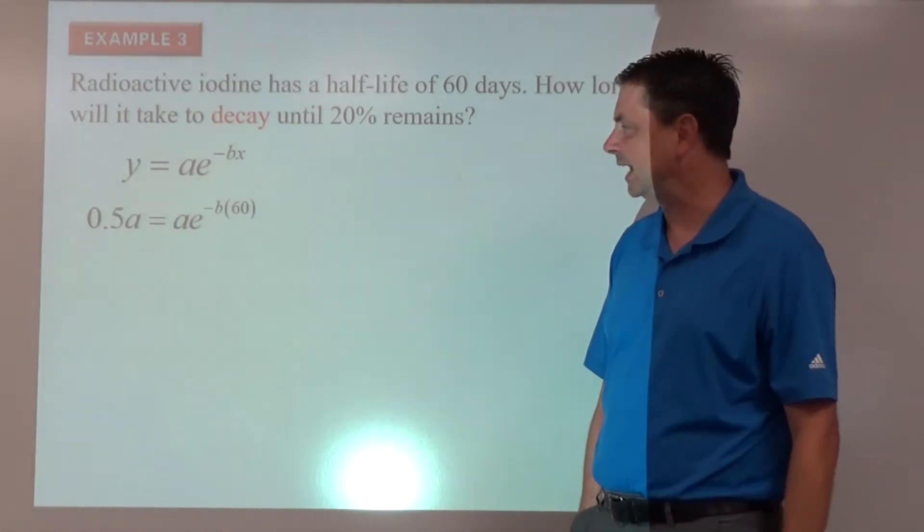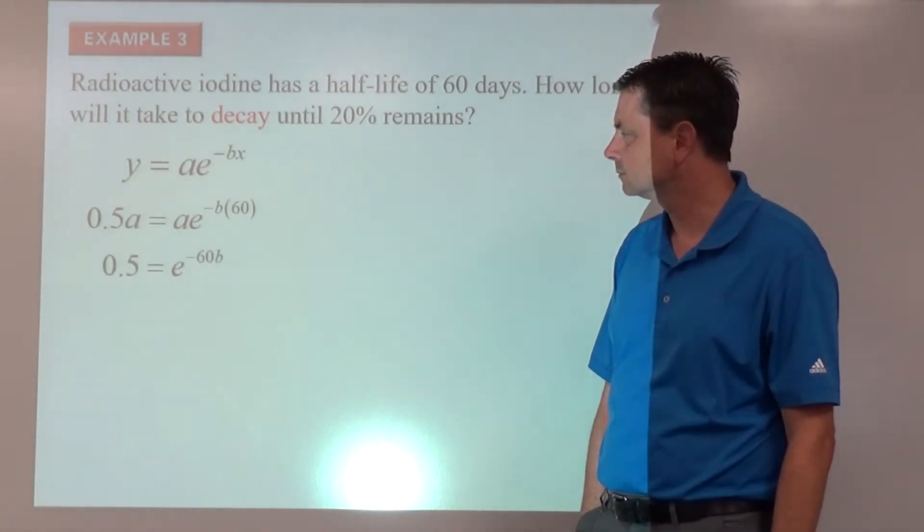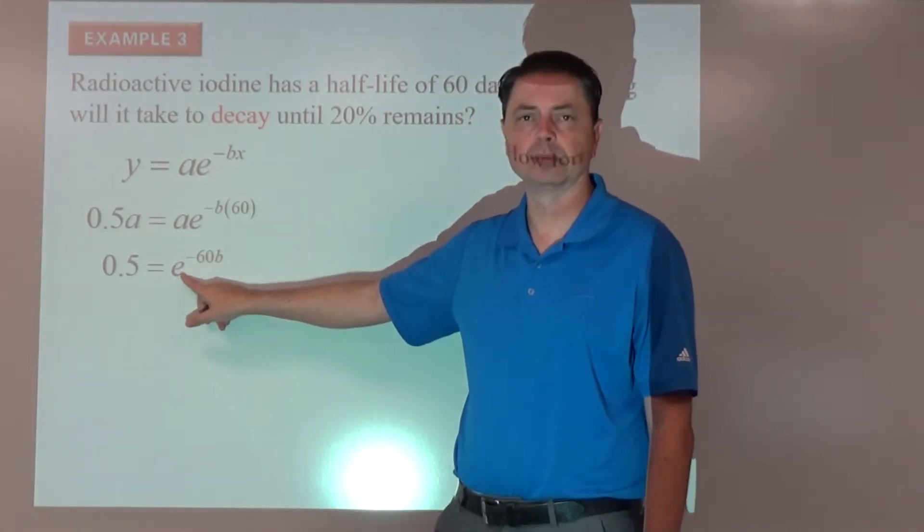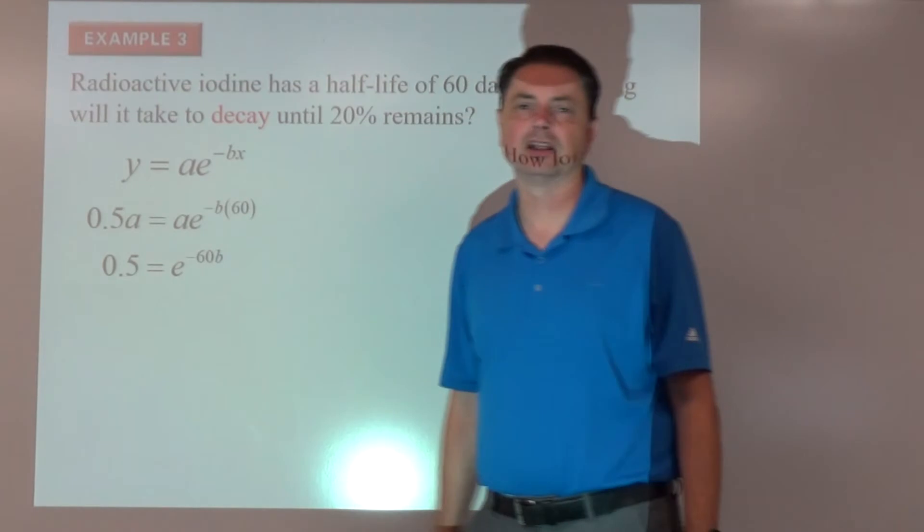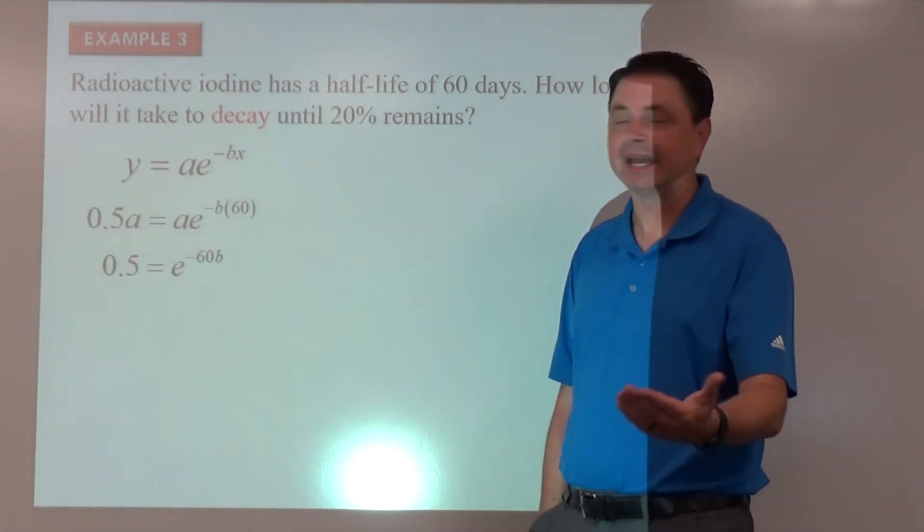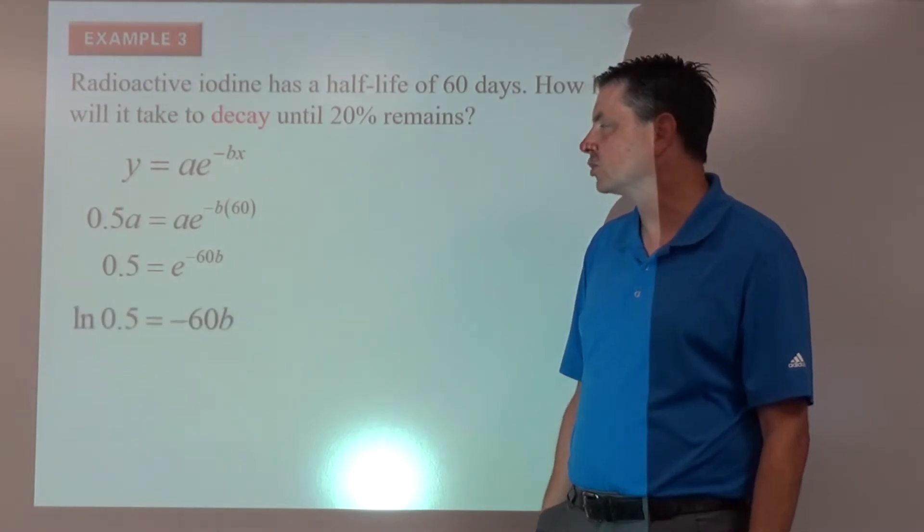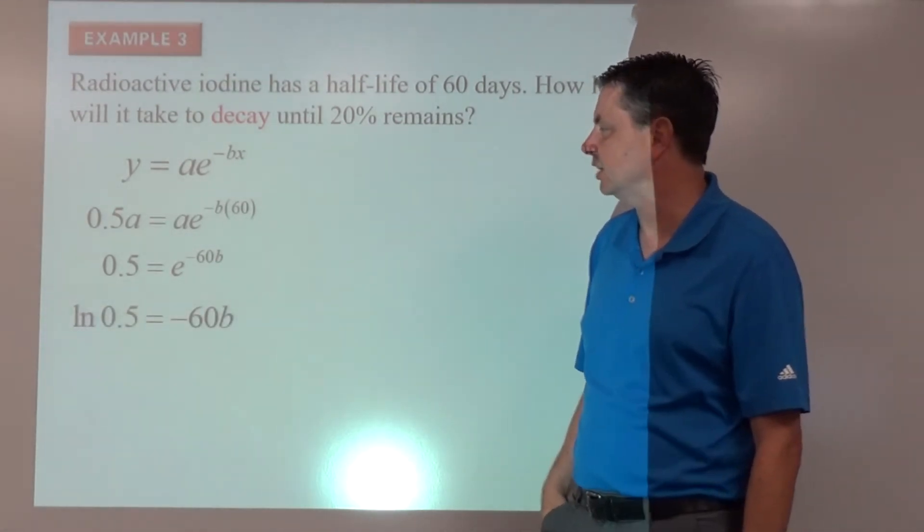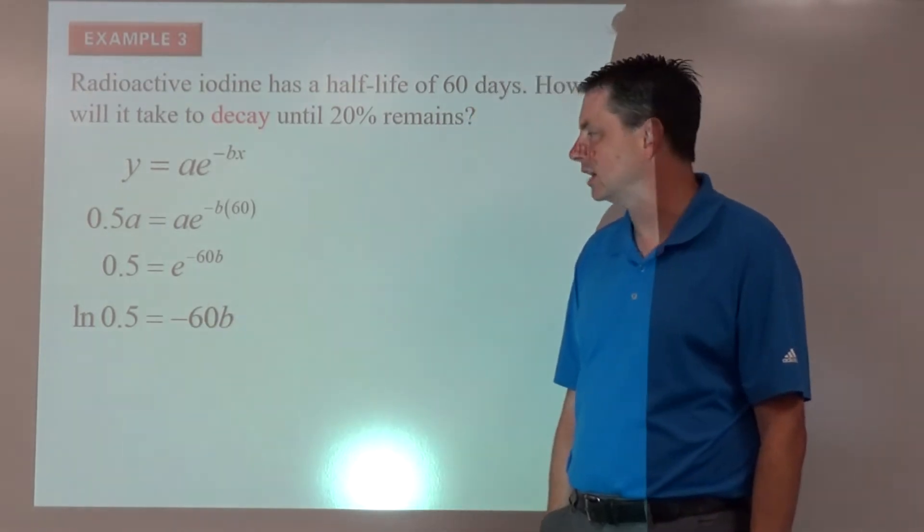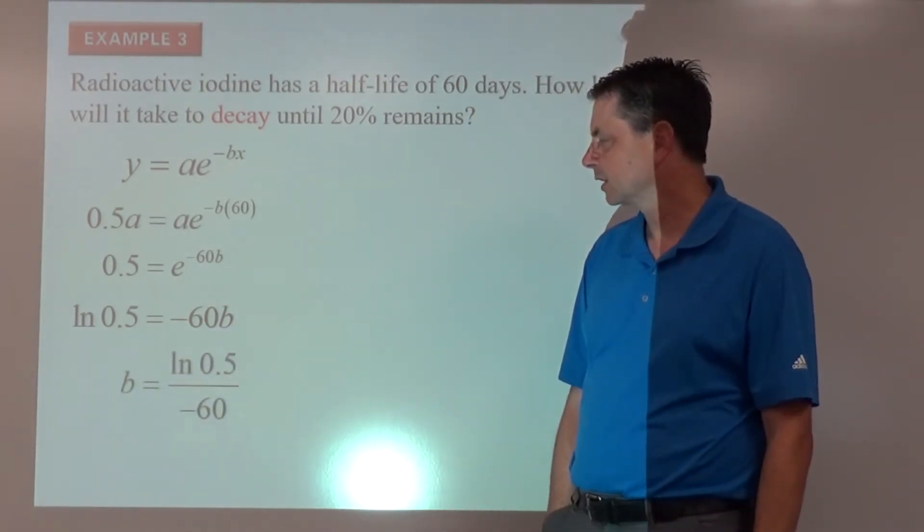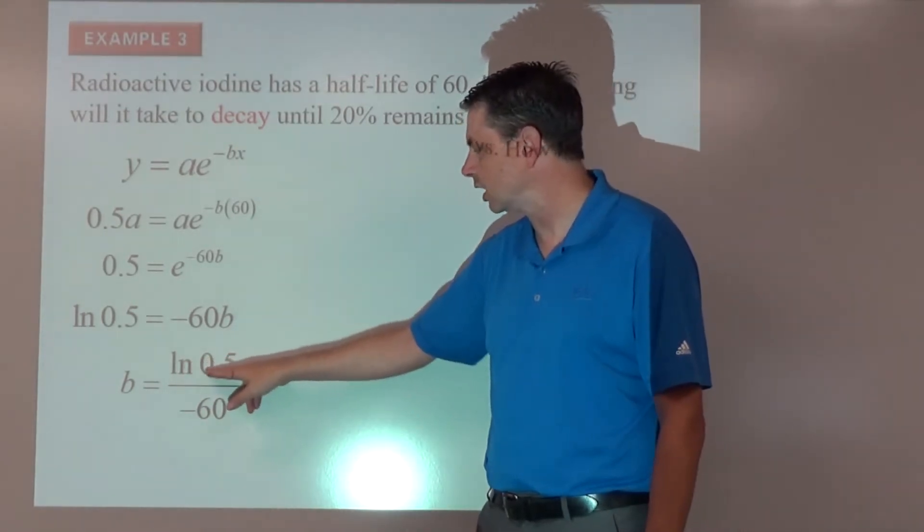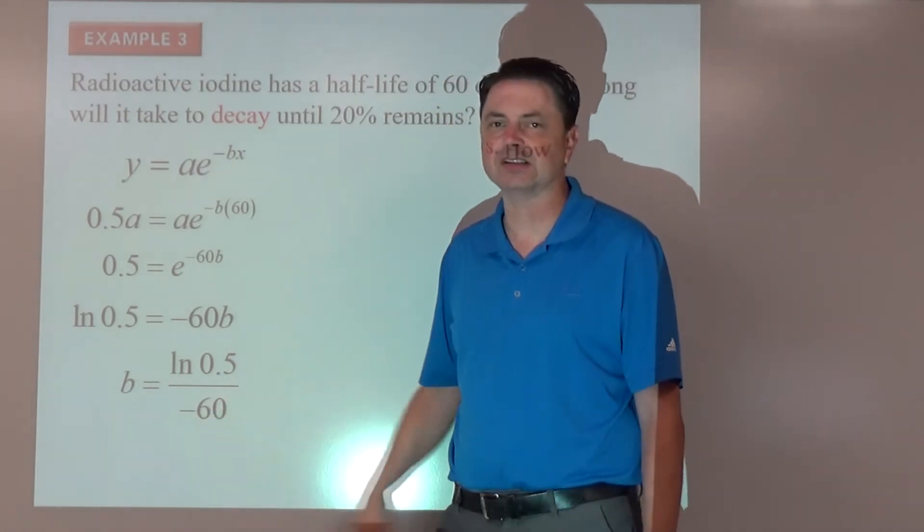So 0.5a amount later is equal to initial amount times e to the negative b times x. So we're going to solve for b. b is what we're looking for here, basically to get the decay rate. So we'll divide both sides by a. And then to access the b, we're going to have to remove our base. So we'll rewrite that as a logarithm. So log base e, well, that's just the natural log. So the natural log of 0.5 is equal to negative 60 times b. We divide by negative 60 on both sides. We get an exact value of b is equal to the natural log of 0.5 divided by negative 60.